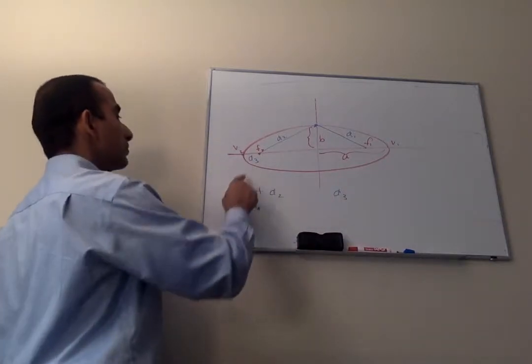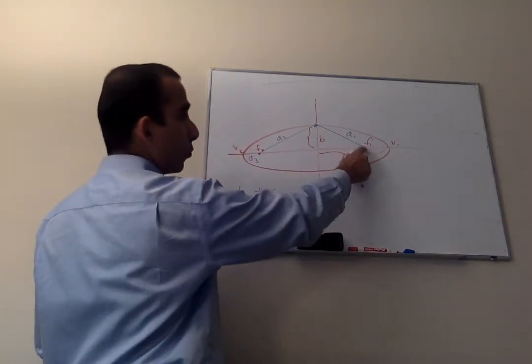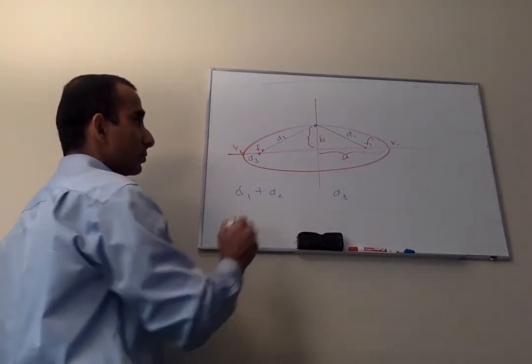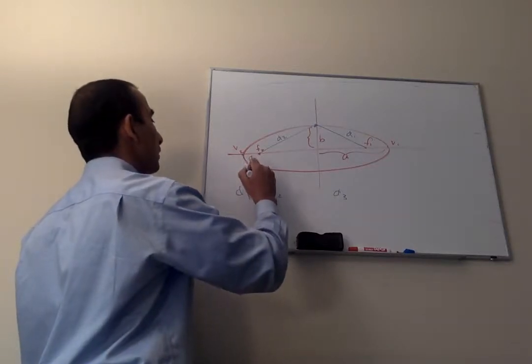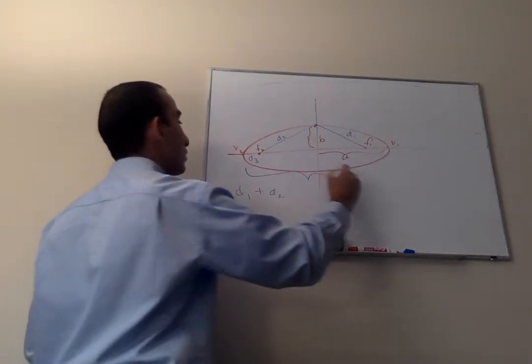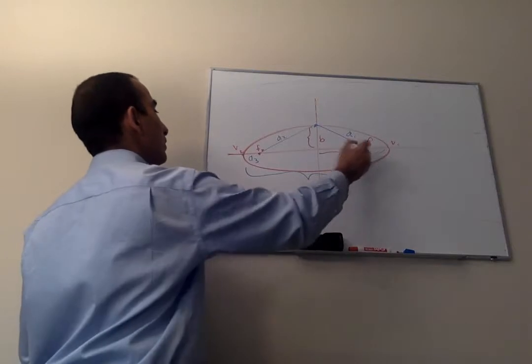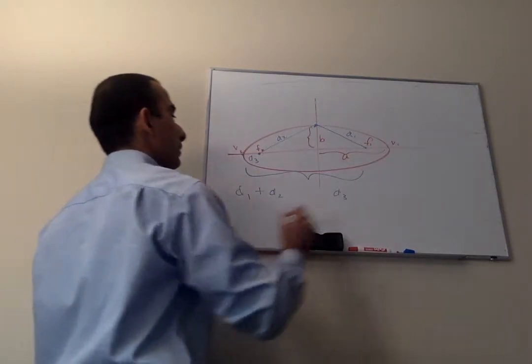And the distance from foci 1 to vertex 2, I'll mark it over here in blue, this distance over here, let's call that D4.